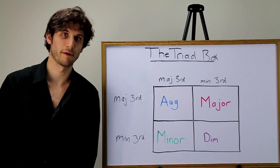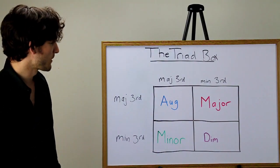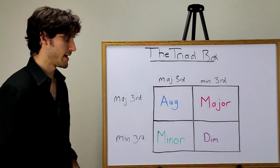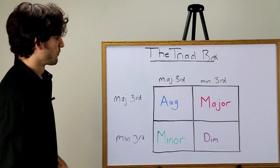When we first started talking about triads, we talked about how we can construct them by stacking thirds on top of each other. We represented that visually in this chart, the triad box.